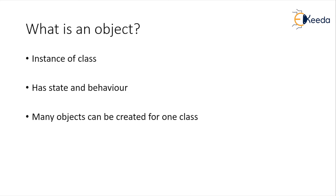What we have discussed so far is what is an object. The definition: an object is an instance of a class which has got state and behavior. State is represented by the property values available for that particular object, and behavior is nothing but the methods which are available for that particular object.